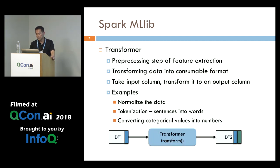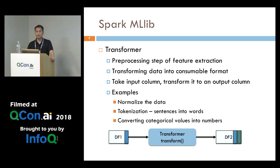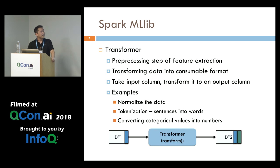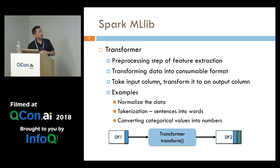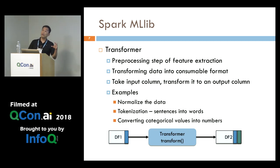The first one is the transformer. Transformer is commonly used during the preprocessing step for doing featurization. You've got to convert from text data into numbers, or transform your data so that it can be fed into an algorithm — at the end of the day, everything has to be numbers. You might have to scale it down or scale it up. So transformers let you normalize the data, do tokenization, and so on. You could have 5 or even 20 transformers, depending on what your data is.